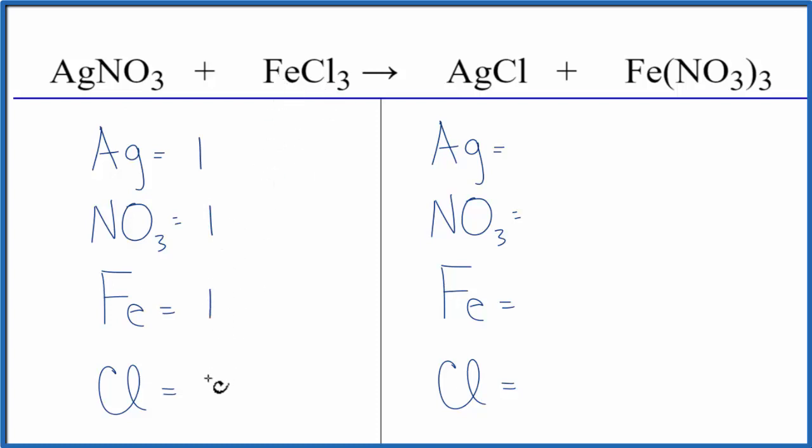We have one iron and three chlorines. On the product side, we have one Ag, and then NO3s, we have three of these nitrate ions. We have one iron and one chlorine.